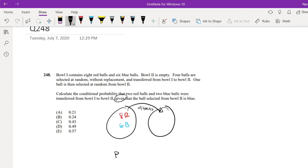Okay, so this is basically the probability we're looking for. What is the probability that there is 2 red and 2 blue given that ball selected from ball 2 is blue. Agreed? Okay, so what is that?